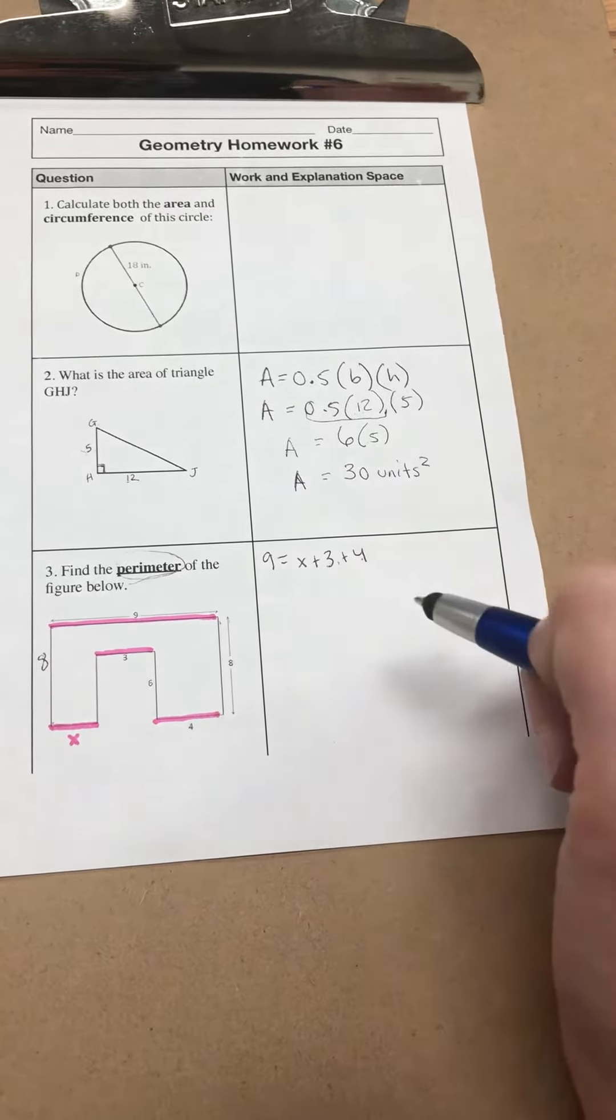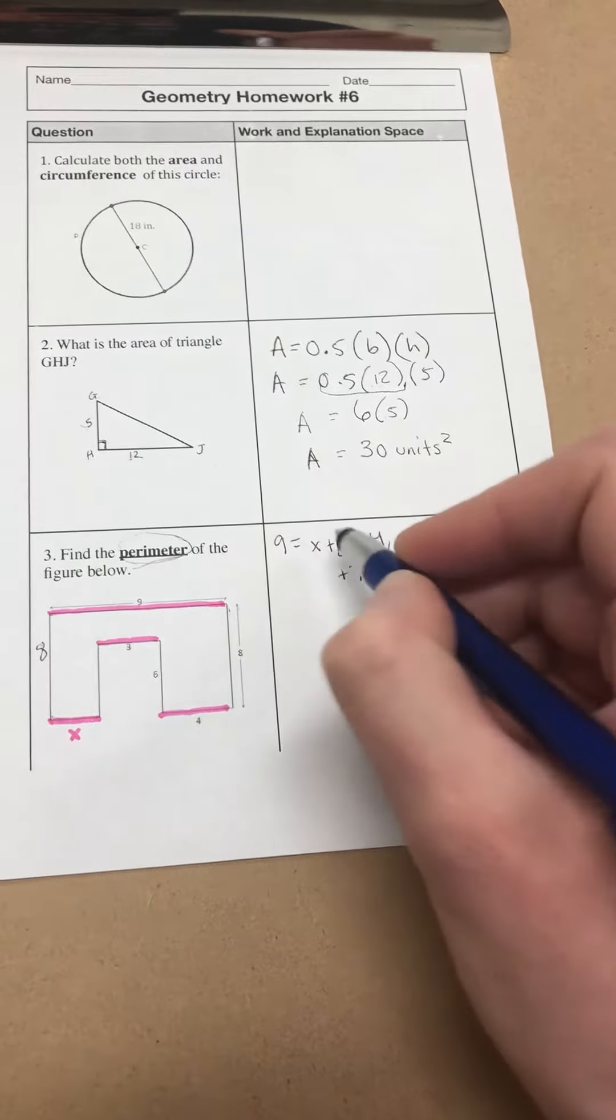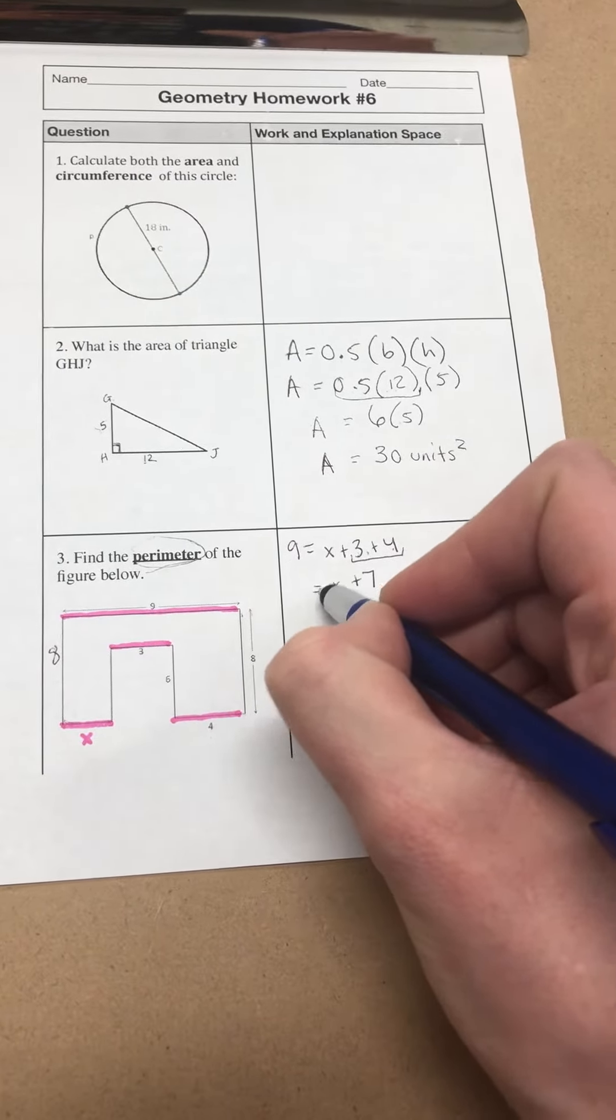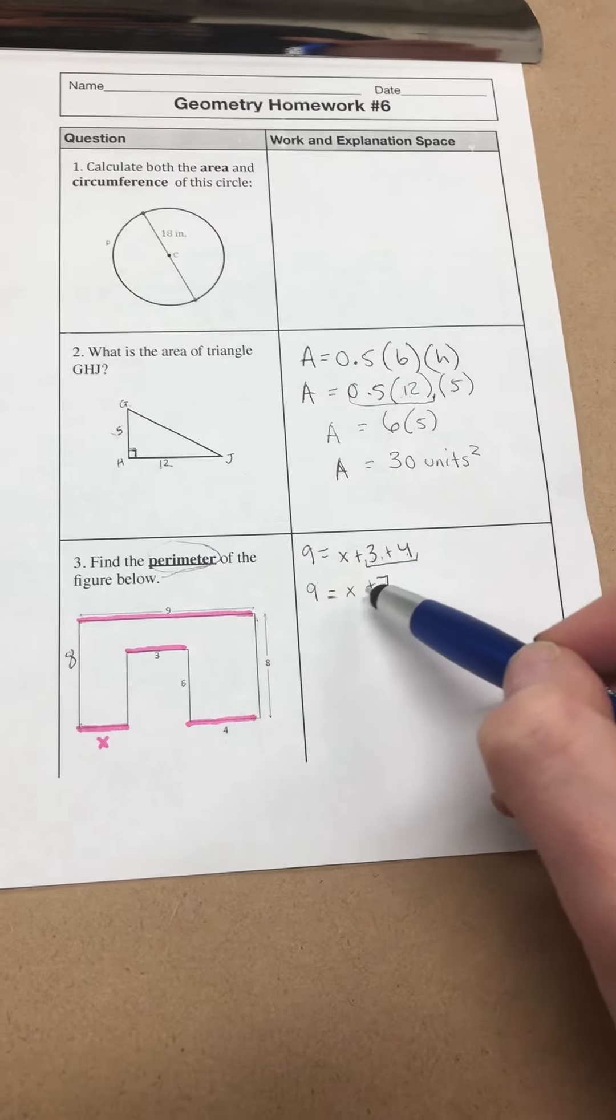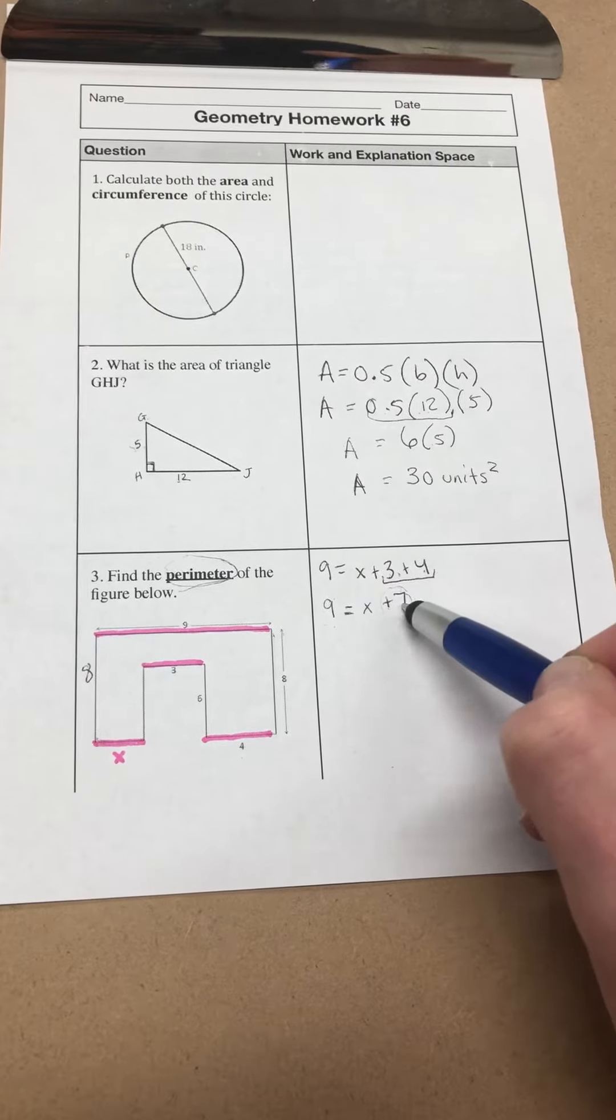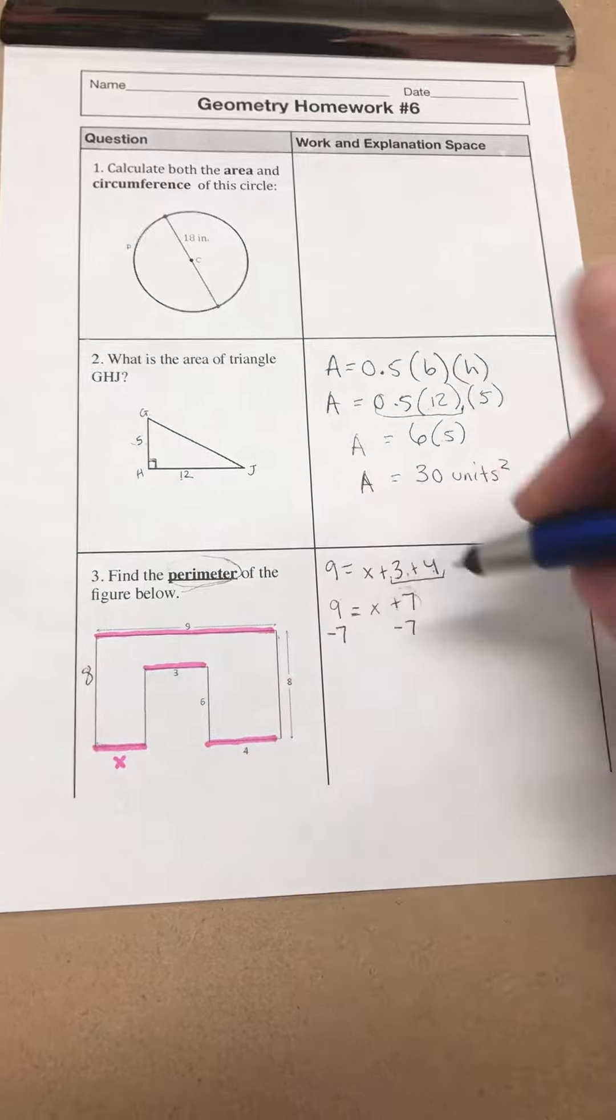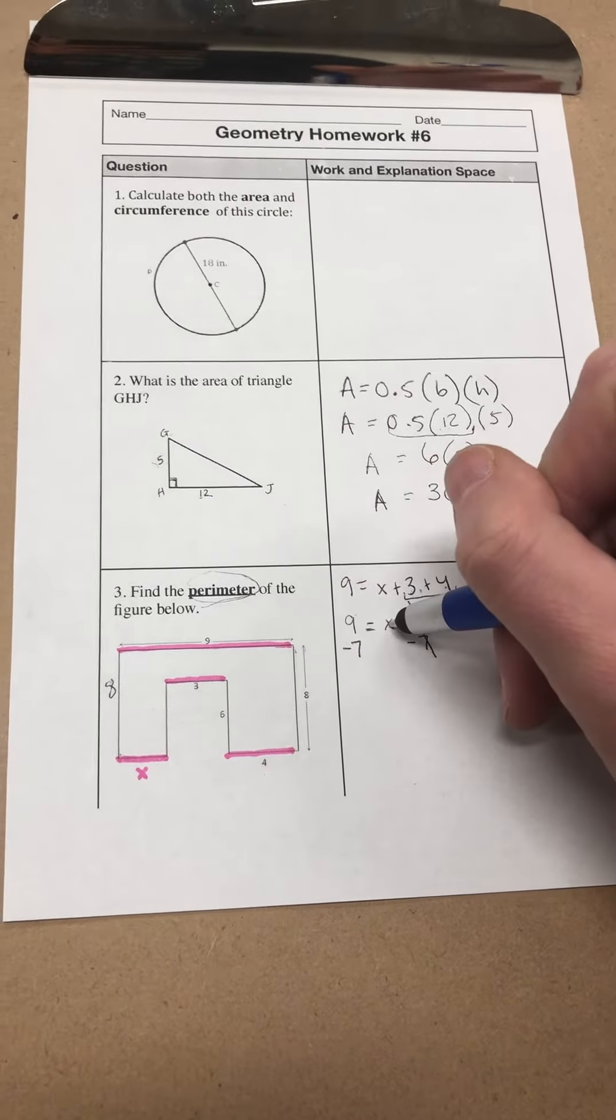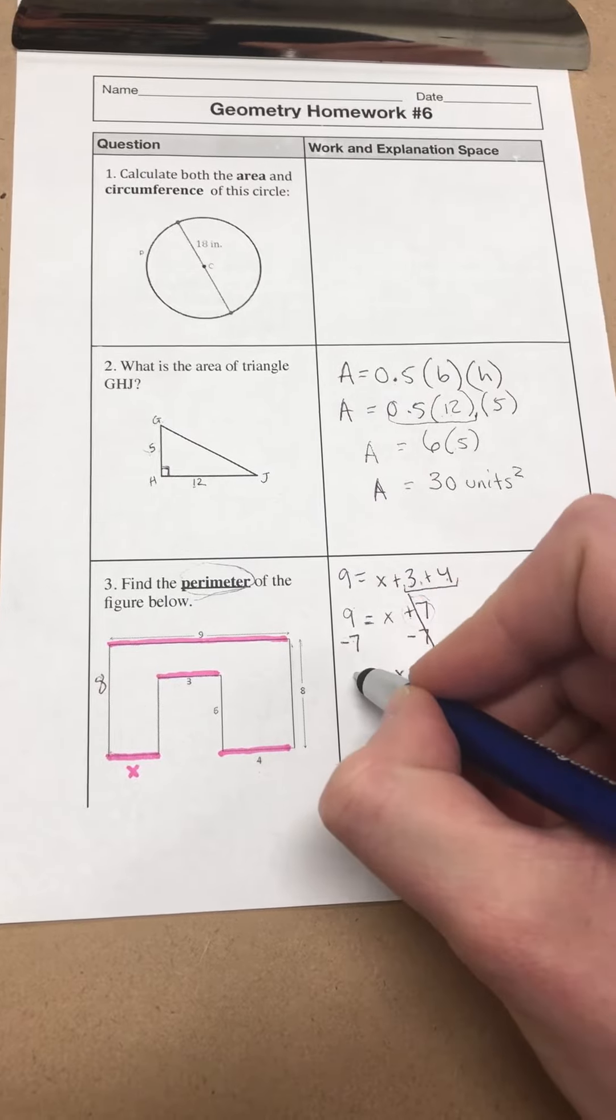Then I can just solve this. I have two integers, so I can add those together. 3 plus 4 is going to be positive 7. Carry down my x and carry down my 9 and my equal sign. Then I have 9 equals x plus 7. I need to move this integer to combine with this. Right now it's being added. To undo that, I'm going to do minus 7 on both sides. We would cancel this out, and I'm left with x on this side. 9 minus 7 would be 2. So I now know that that missing side is 2.